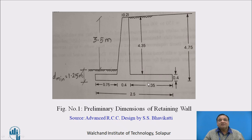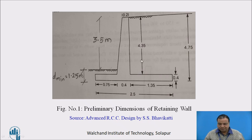Here h is 4.75 meters. The height from ground level to the top is 3.5 meters. We then find out the exact height of the stem, which is 4.35 meters.